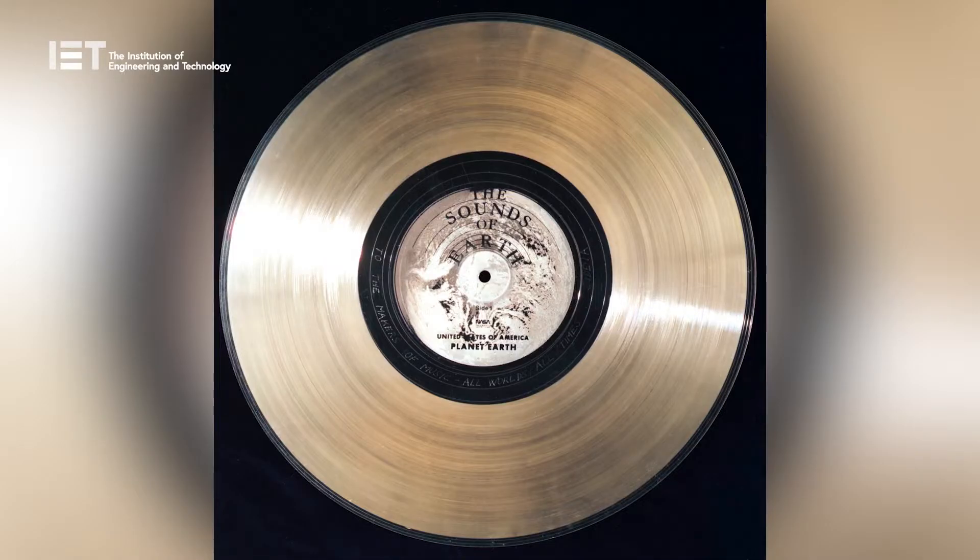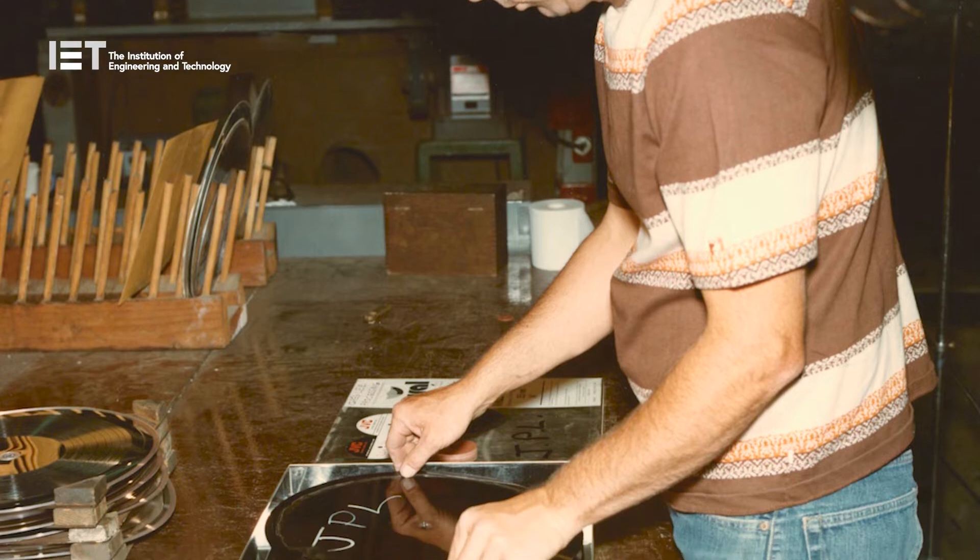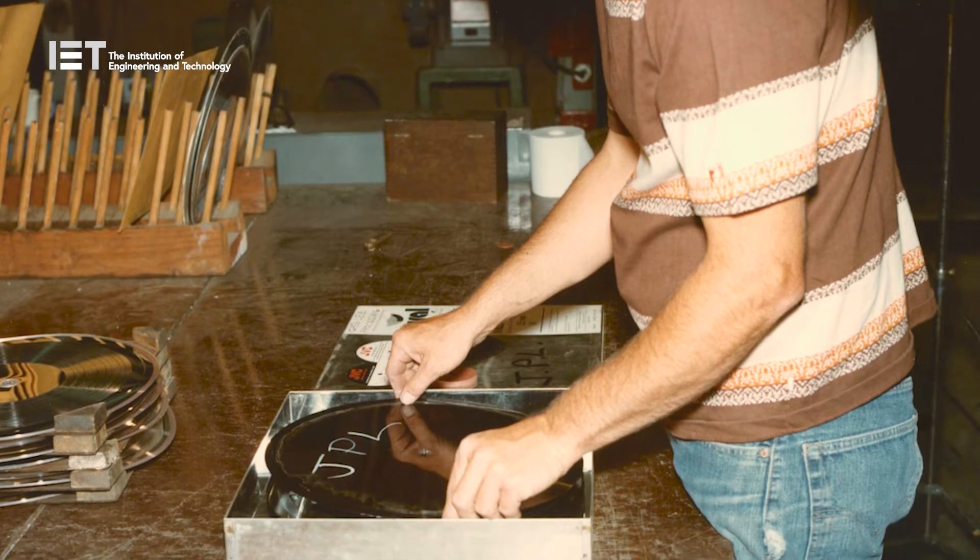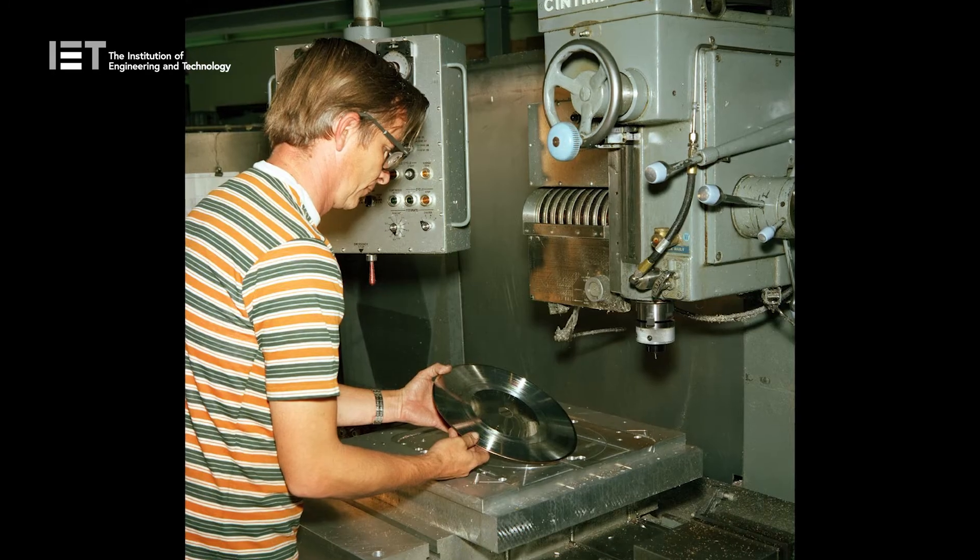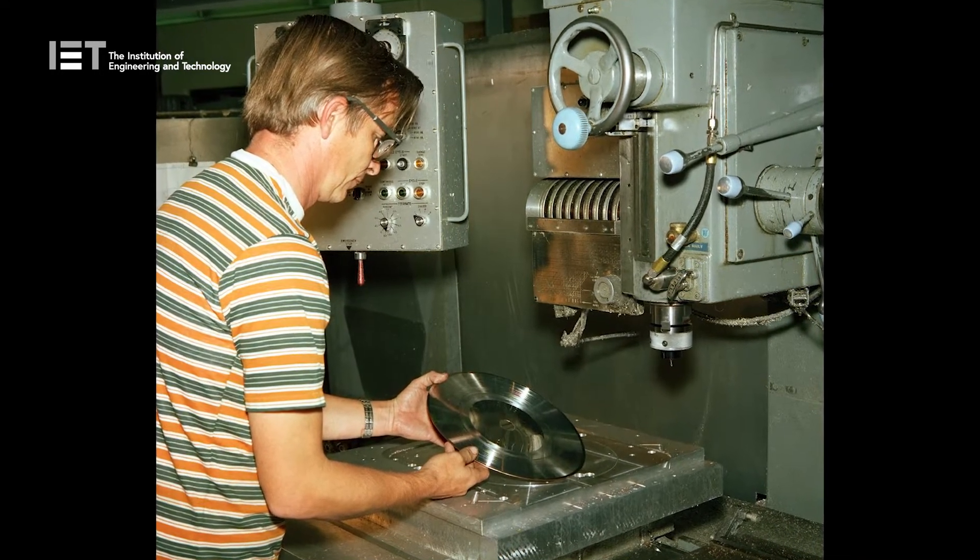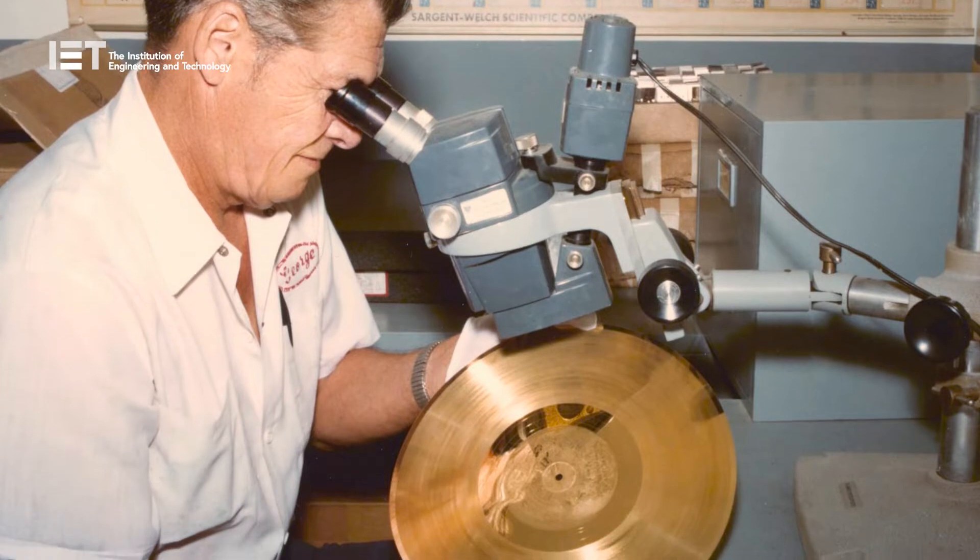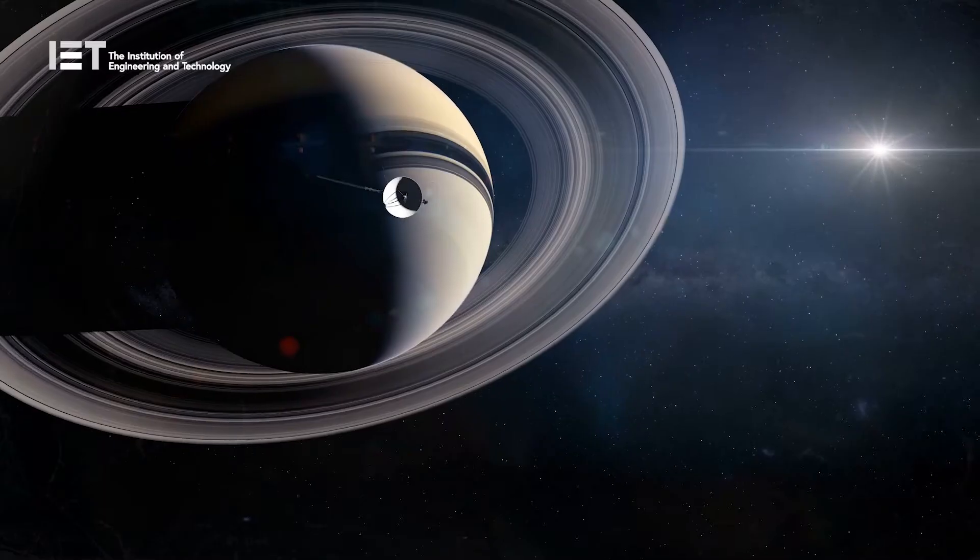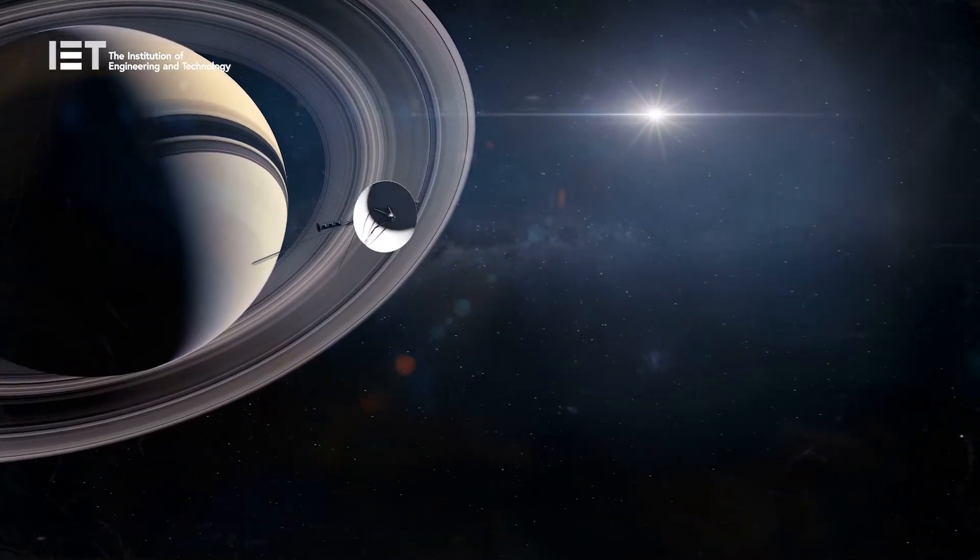The record itself is 12 inches in diameter and is made of gold-plated copper. The record cover is aluminum and electroplated upon it is an ultra-pure sample of the isotope uranium-238, which has a half-life of 4.468 billion years to help the record survive its long journey across the stars.